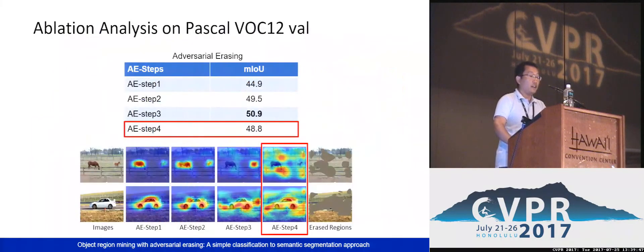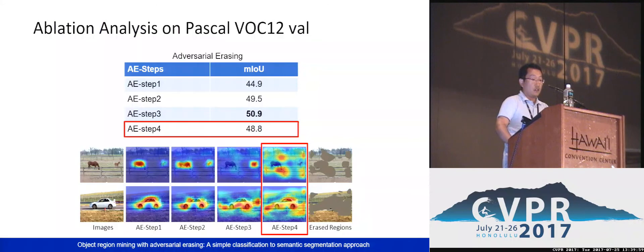Here is the ablation analysis of adversarial erasing. We can see that the best performance is achieved with three erasing steps. With one more step, the performance will drop. From the visualization samples, we can see that many true negative regions are included with more erasing steps.